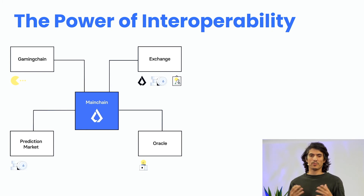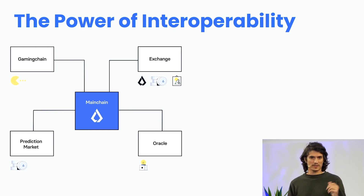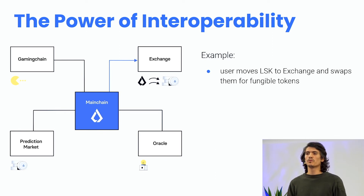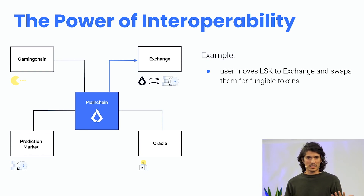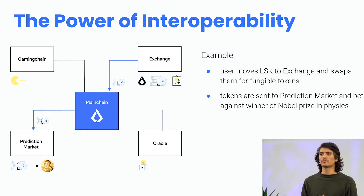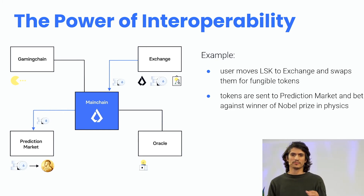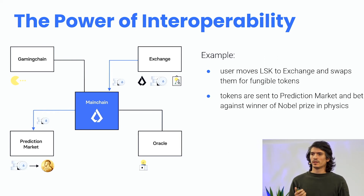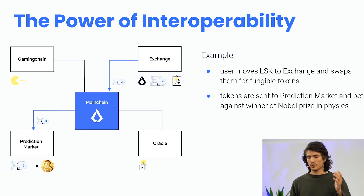Let me illustrate the power of LISC interoperability with a concrete example. Our story starts from the main chain where a user has some funds. First, they move some LISC tokens to an exchange and swap them for a fungible token, indicated here by coins in silver. This exchange is a sidechain connected to the main chain via the interoperability protocol. In the second step, the user sends their new fungible token funds from the exchange sidechain to the prediction market sidechain with a custom cross-chain transaction. In the prediction market sidechain, the user can bet on the outcome of an event — for example, they bet that Roger Penrose will win the Nobel Prize in Physics for 2020.